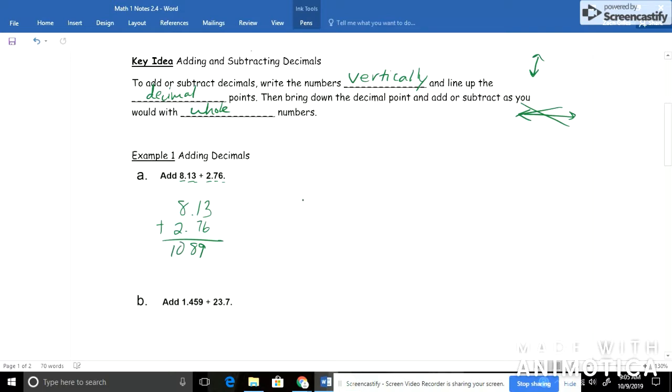And what we need to do with our decimal is bring it straight down in our problem. So we add two digits and then the decimal, two digits and then the decimal. So I'll do the same here. Two digits, bring my decimal straight down. So my answer would be 10.89.